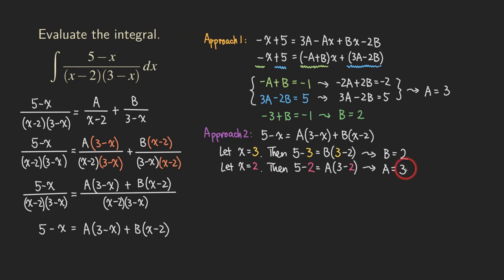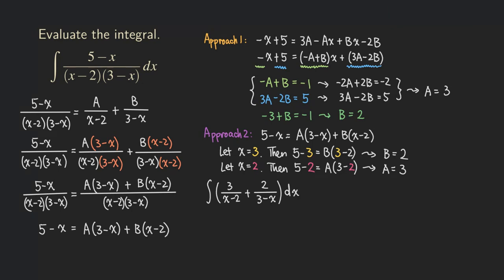Which way do you prefer? For more complicated problems it is a good idea to use a combination of both. For this particular problem, method two is a lot faster. Now that we have A = 3 and B = 2, we go back to the original problem and finish the integration. We rewrite the integrand as 3/(x - 2) + 2/(3 - x) and integrate this.